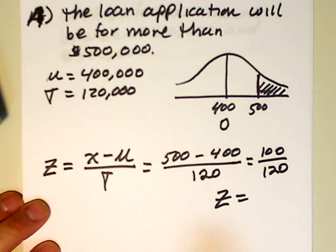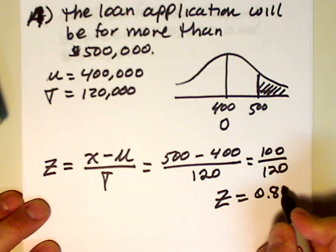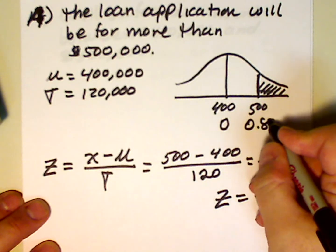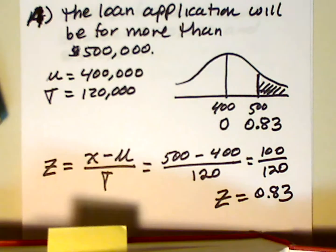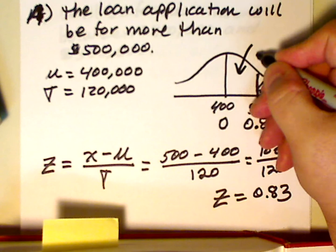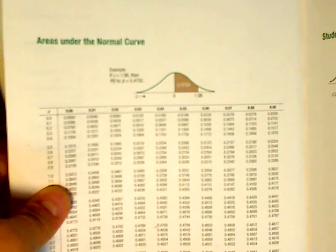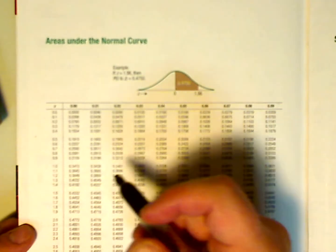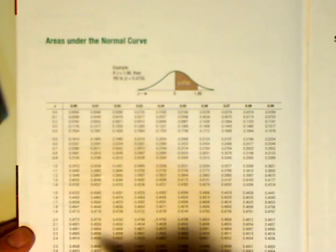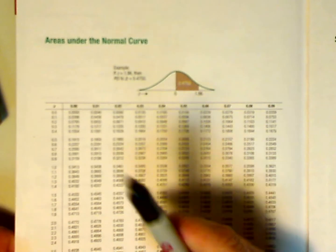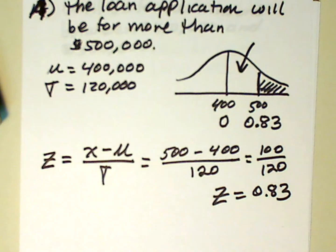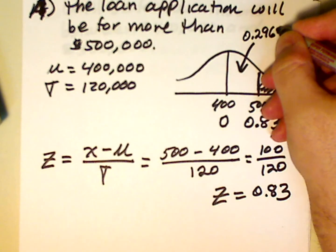And therefore, z is equal to 0.83. So this z value is 0.83. Now what we're going to do is we're going to go to our textbook and we're going to look up what the area is associated with 0.83. But the area this particular table gives us is this area from 400 to 500,000. So we're going to go down the side underneath z to where it says 0.8. And then we're going over to the column that says 0.03. And we see that that value, that area, is 0.2967.